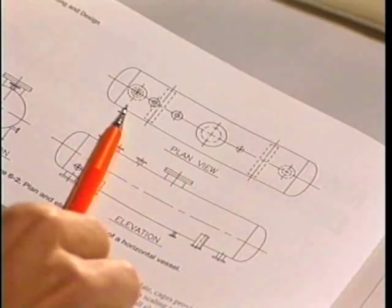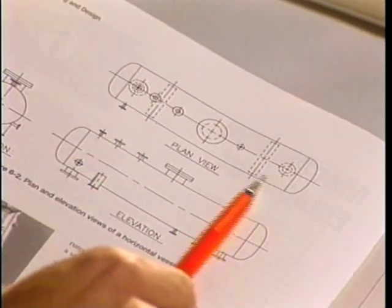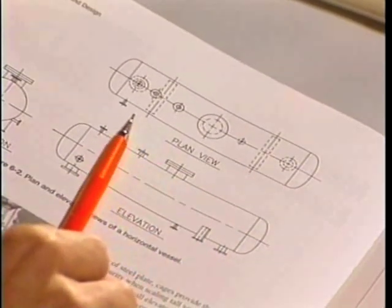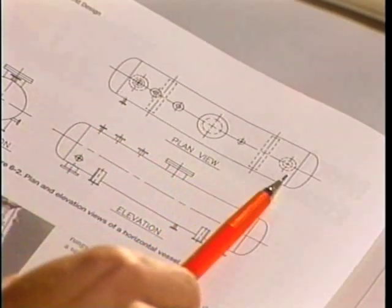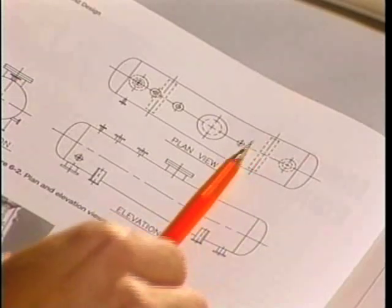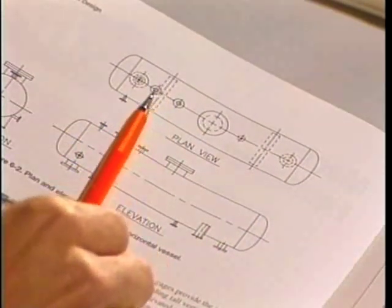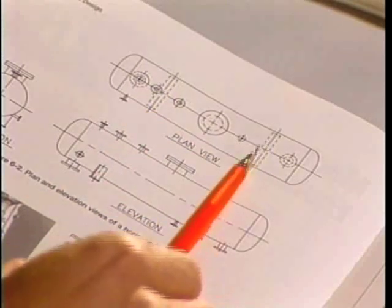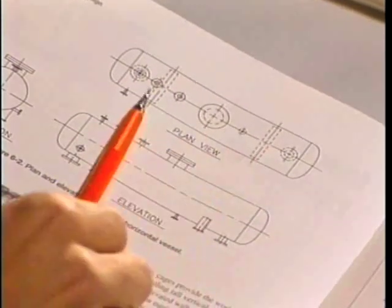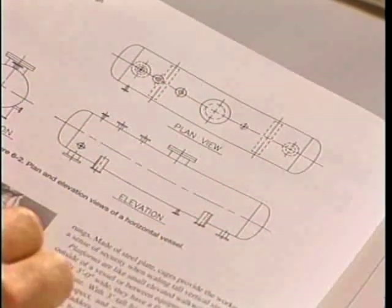Now let's look at how we represent the horizontal vessel on a drawing. Here we have a plan view, which is the top view, typically shown on arrangement drawings. We can see the vessel's length and diameter, the two heads on the ends, and the cradles or saddles represented as hidden lines.